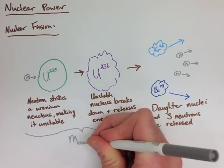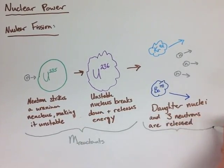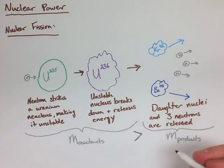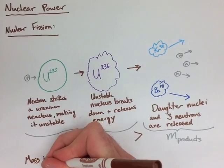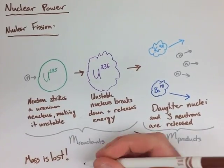The mass is greater in the reactants than it is in the products. This goes against chemistry. But what happens is mass is lost here, and it's been converted into pure energy.